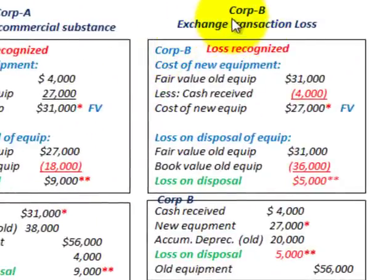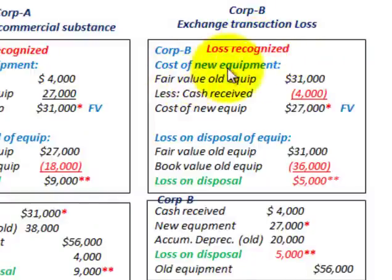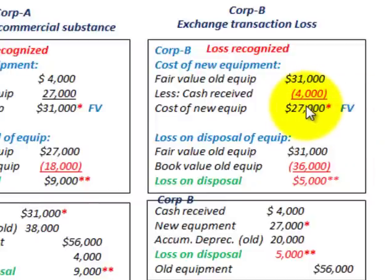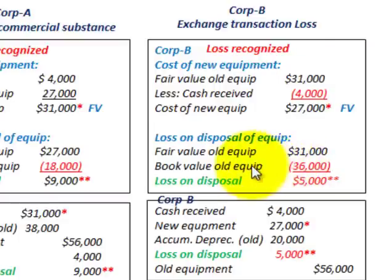Now let's look at the case for Corporation B, where we have an exchange transaction loss — the loss would be recognized. For the cost of the new equipment, we take the fair value of Corporation B's old equipment, less the cash received, and that gives us the cost of the new equipment, which equals the fair value of Corporation A's old equipment that becomes Corporation B's new equipment. For the loss on disposal, take the fair value of the old equipment and subtract out the book value of the old equipment — that gives you the loss on the disposal.